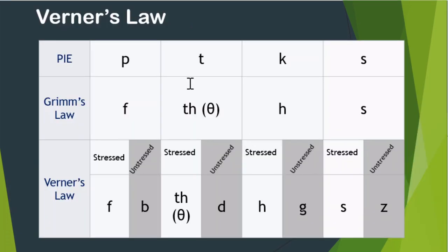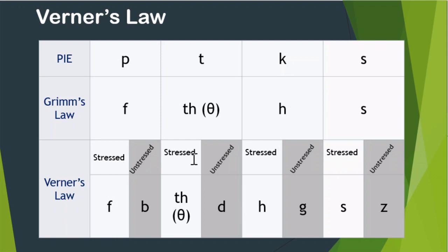Let us look at it in detail. Proto-Indo-European 'p', 't', and 'k' — according to Grimm's Law — became 'f', 'th', and 'h' in Germanic languages. But Werner said that 'p', 't', and 'k' became 'f', 'th', and 'h' only when they occurred in stressed positions. In unstressed positions, these 'p', 't', and 'k' became 'b', 'd', and 'g'. That is the neat explanation to the problem that Karl Werner gave, which is today known as Werner's Law.